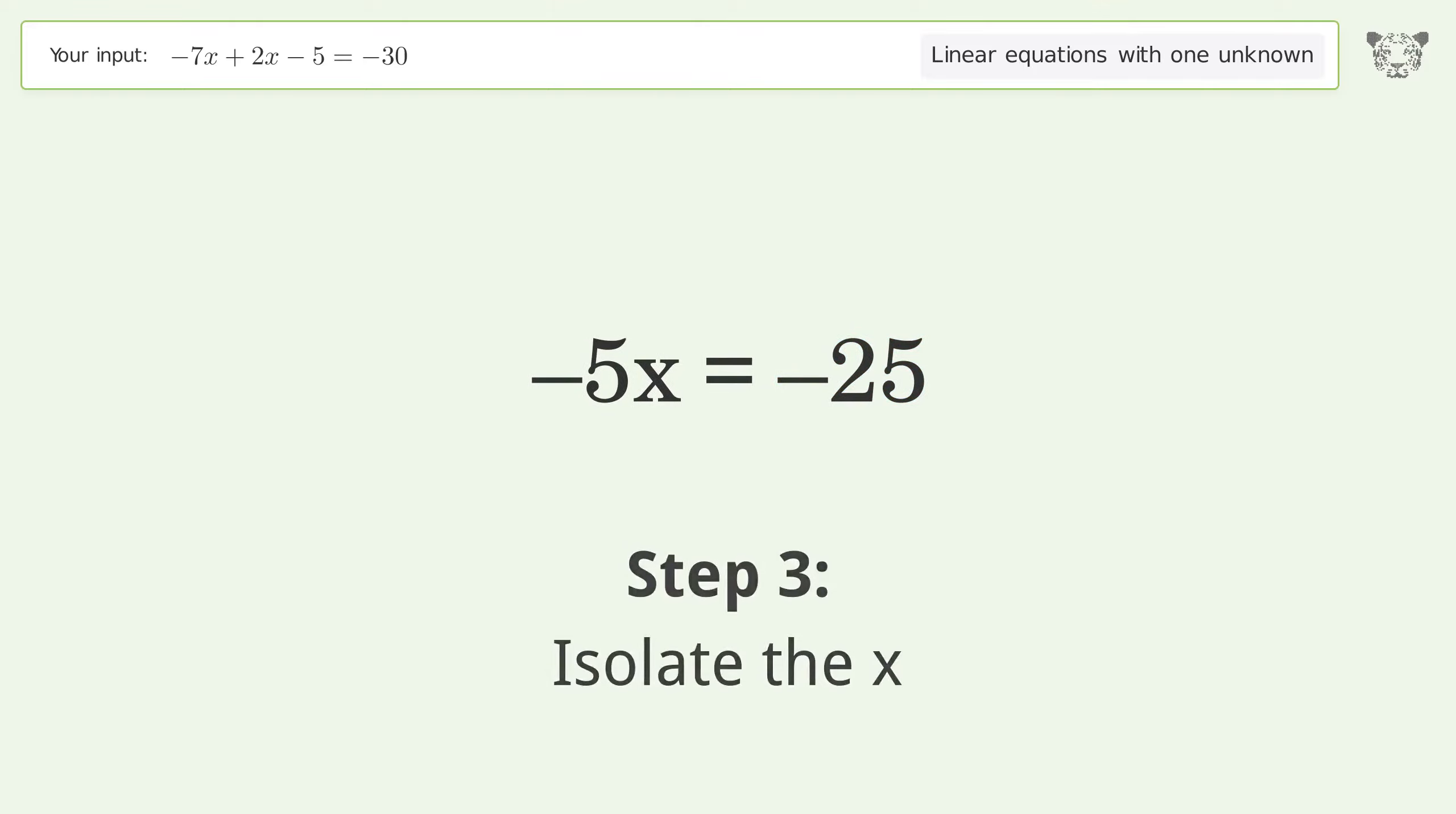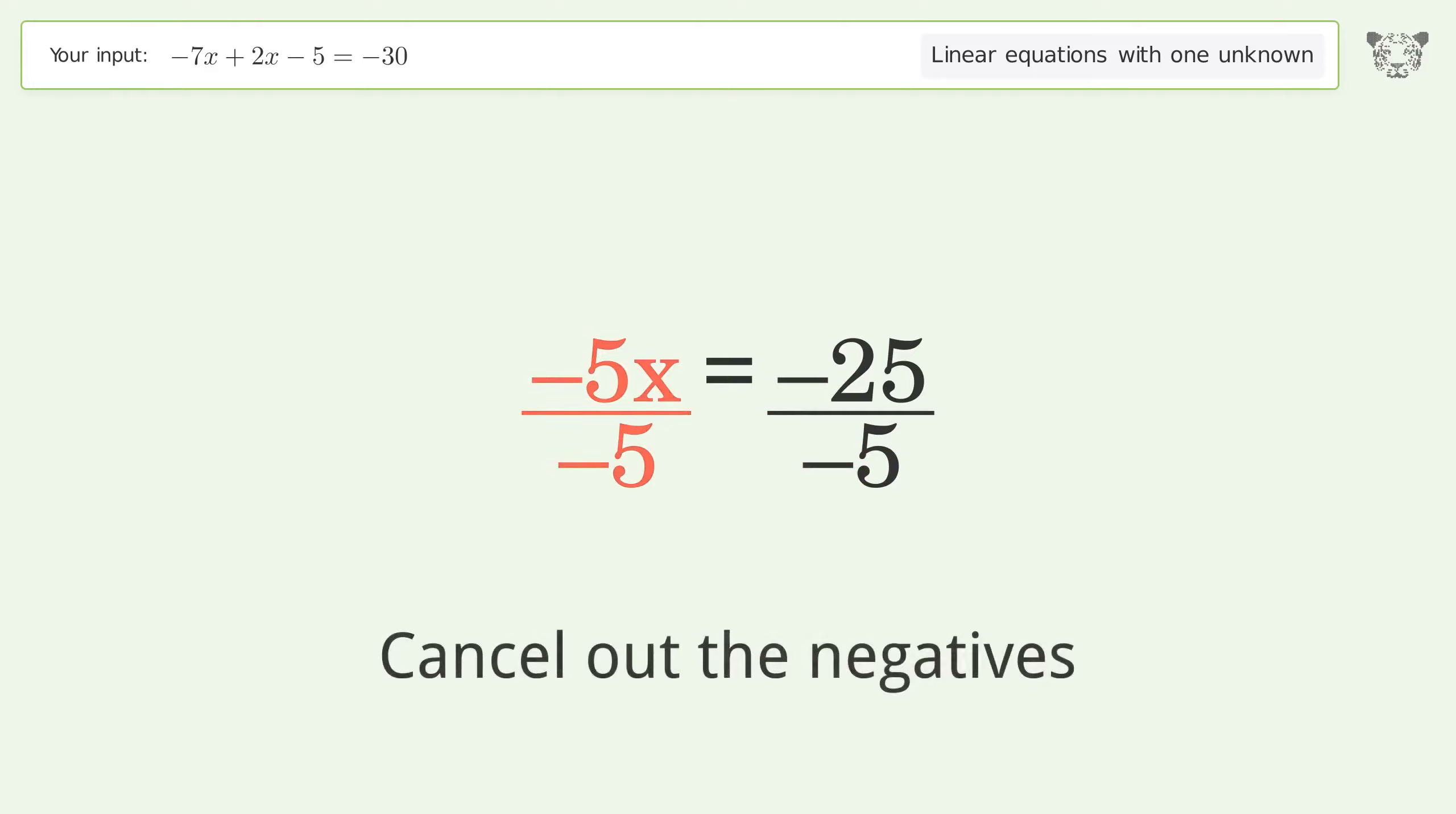Isolate the x. Divide both sides by negative 5. Cancel out the negatives.